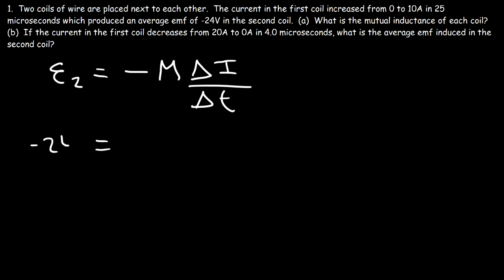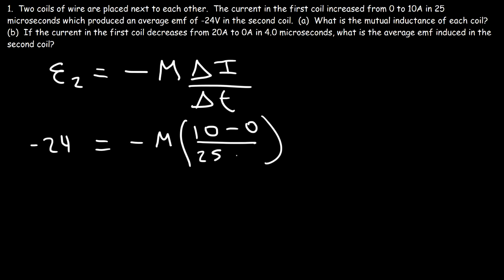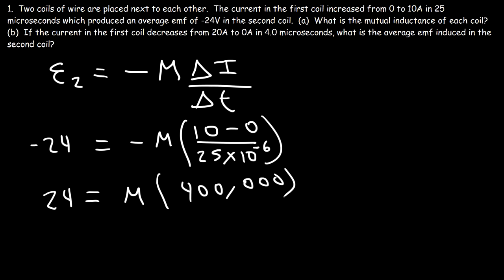The induced EMF is negative 24 volts. The change in current — final minus initial — is ten minus zero, and it changes over a time period of 25 microseconds, where micro is 10 to the minus 6. Dividing both sides by negative one cancels the negative sign. Ten divided by 25 times 10 to the minus 6 equals 400,000. So M equals 24 divided by 400,000, giving a mutual inductance of 6 times 10 to the minus 5 henrys.